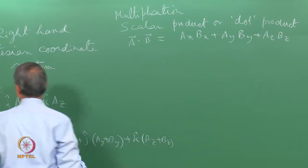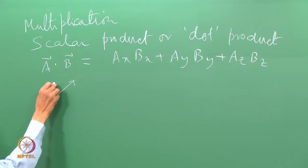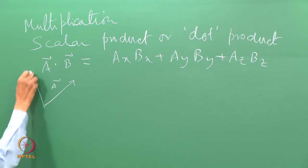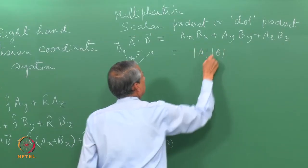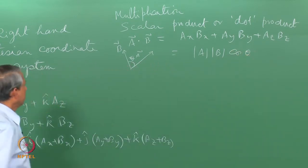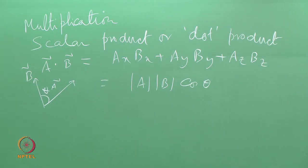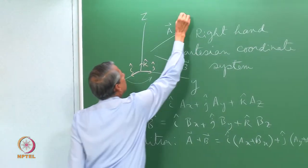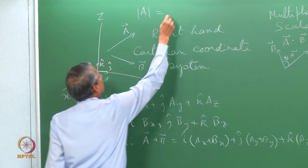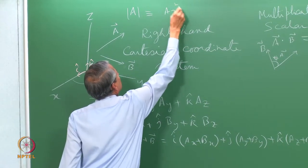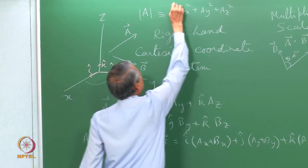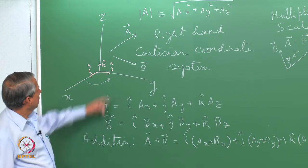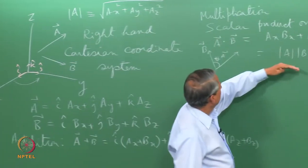The dot product can also be expressed geometrically. If the angle between vector A and vector B is theta, then A·B equals the magnitude of A times the magnitude of B times cosine theta. The magnitude of a vector is a measure of its length, and it is defined as the square root of ax² + ay² + az².